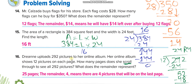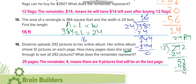Prina uploads 292 pictures to her online album. Her online album shows 12 pictures on each page, so you divide 292 by 12. You get 24 with a remainder of 4, meaning 4 pictures are left over. So you need another page for those remaining 4 pictures — that's 25 pages total.